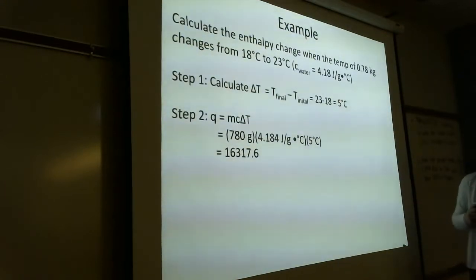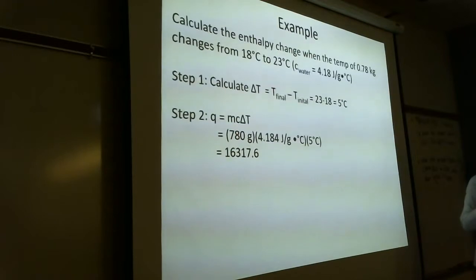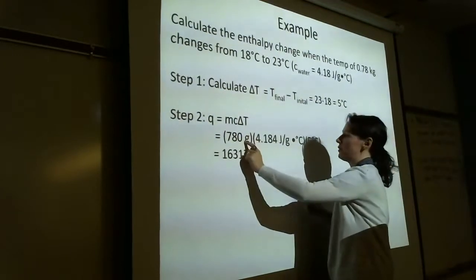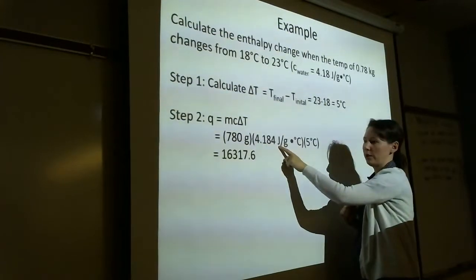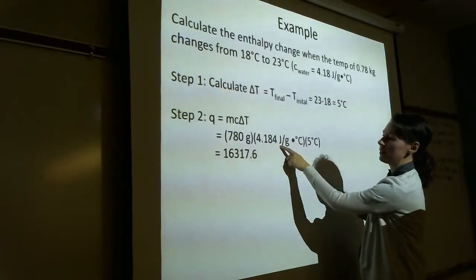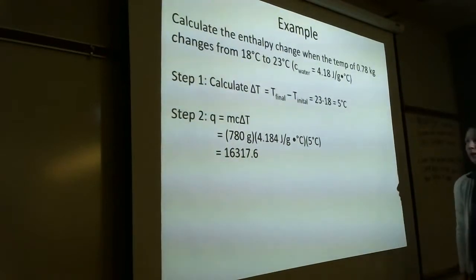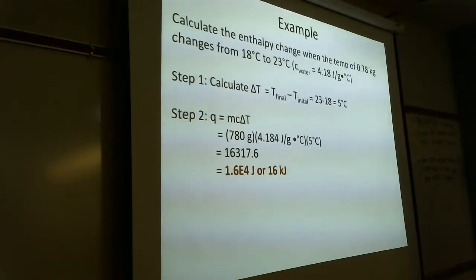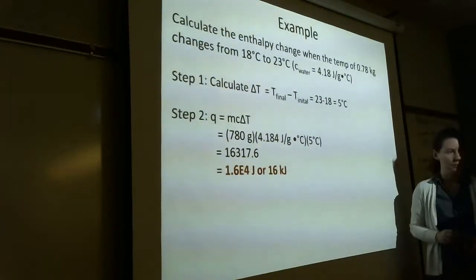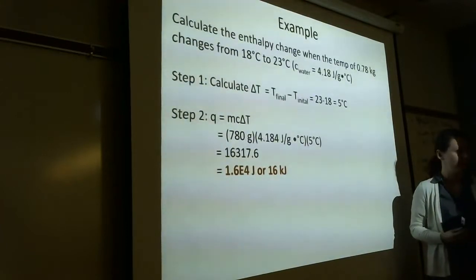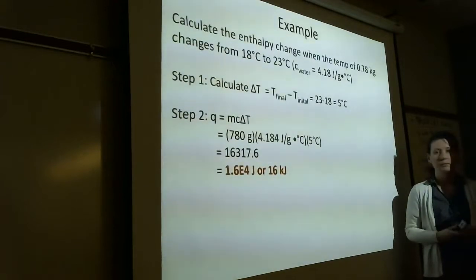Now we calculate. Notice why I changed 0.78 kilograms to 780 grams — the units need to match. If it were in kilograms, grams wouldn't cancel. Grams cancel, degrees Celsius cancel, giving me a unit of joules. So 16,317.6 joules. Rounding to two significant figures: 1.6 × 10⁴ joules. If you wanted to convert that to kilojoules, 1.6 × 10⁴ joules is the same thing as 16 kilojoules. That's why I say the units can be joules or kilojoules.